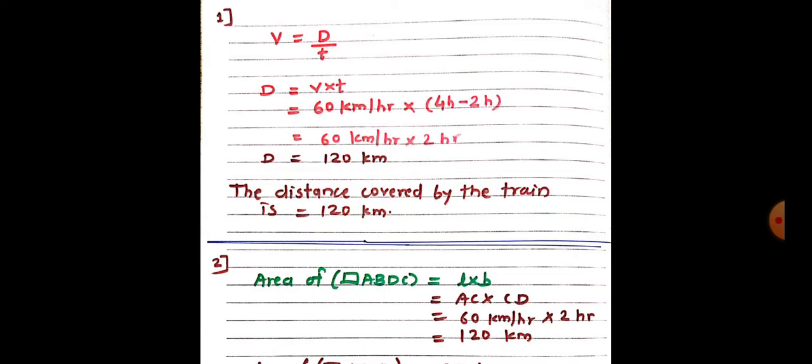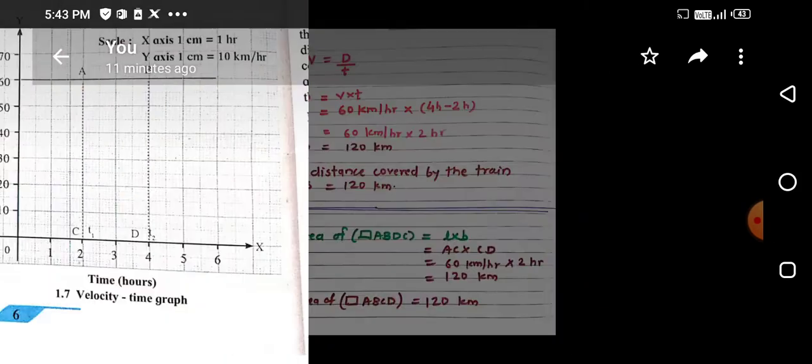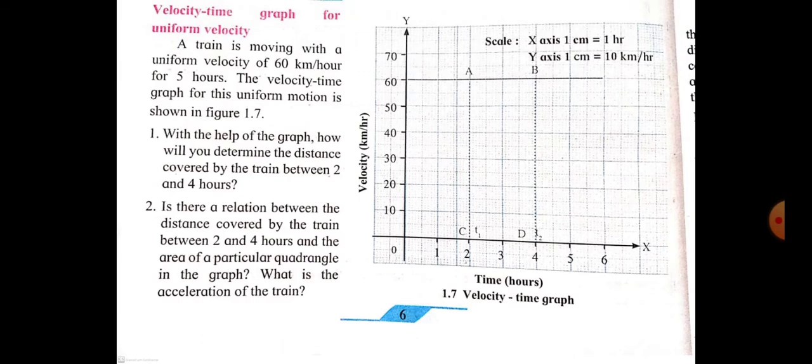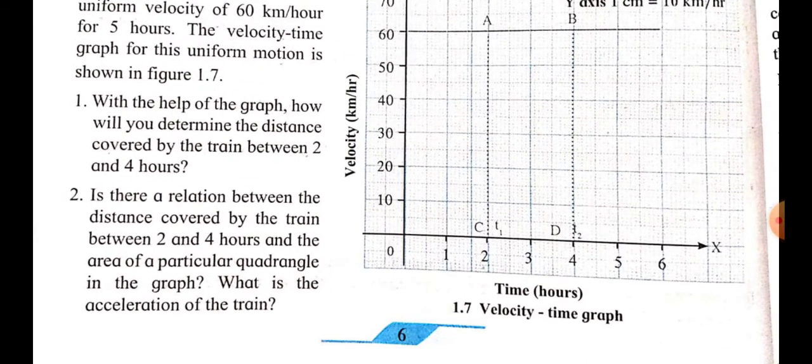We use the formula d equals v into t. The velocity v is 60 kilometers per hour, and the time is 4 minus 2 hours. So distance equals 60 kilometers per hour multiplied by 2 hours, which gives 120 kilometers. The hour units cancel out, so the distance covered by the train between 2 and 4 hours is 120 kilometers.